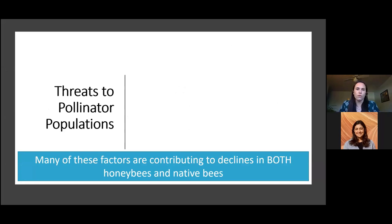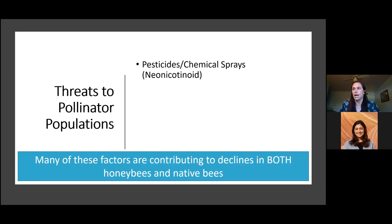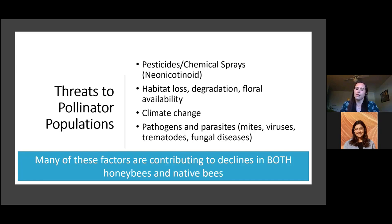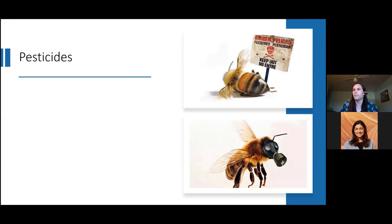I know there have been many other talks about declines in honeybees, so I'm not going to spend too much time on that today. I'm going to focus primarily on the factors contributing to native bee declines. Most of them are actually the same factors that affect both. We'll be talking about pesticides — particularly the neonicotinoid pesticide class — habitat loss, climate change, and pathogens and parasites. There are of course many other factors, but these are the main hard-hitters causing these declines.